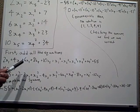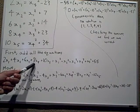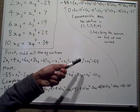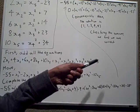2x1 plus 4x2 plus 6x3 plus 8x4 plus 10x5 equals x1 squared plus x2 squared plus x3 squared plus x4 squared plus x5 squared plus 55.